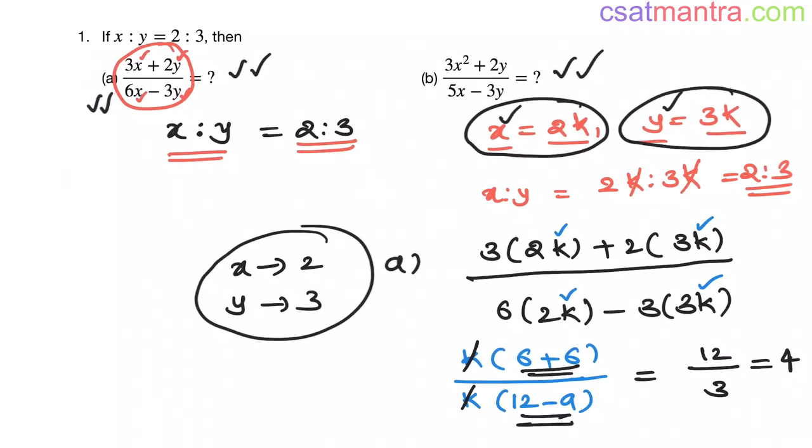That is why I told you can take x as 2 and y as 3. The resultant value will be the same. Now let's verify this: 3×(x=2), 2×(y=3), by 6×(x=2), 3×(y=3). Now this is the same as this one.